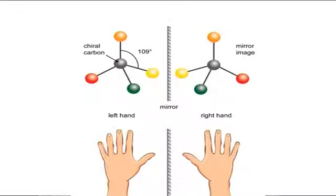Carbohydrates contain chiral carbon atoms. A chiral carbon atom is one that can exist in two different arrangements or configurations, with four different groups attached to it. The two different arrangements of the four groups are mirror images of each other, as shown in Figure 1 on your screen — comparable to the image of a left hand and right hand.